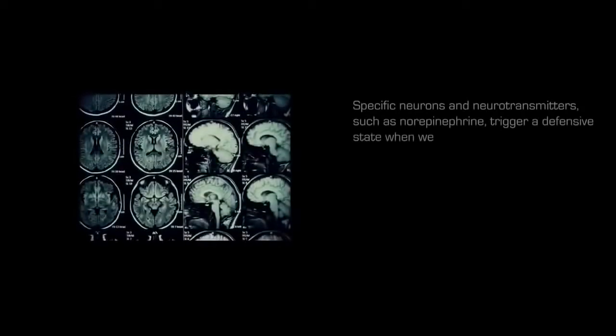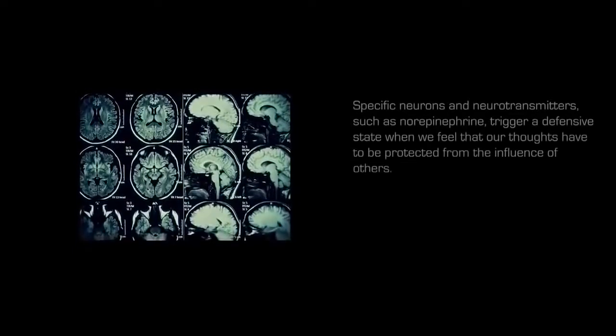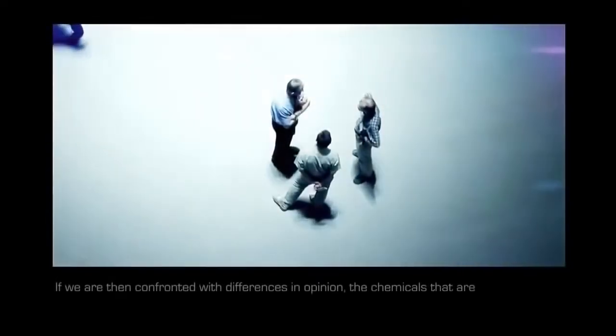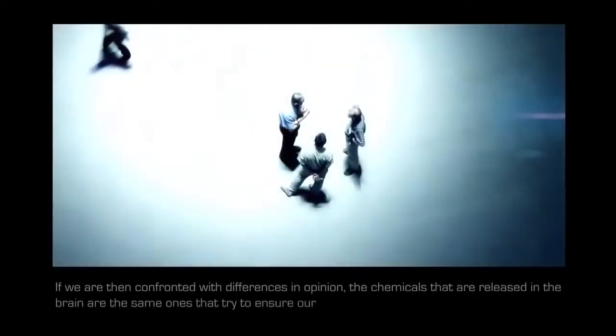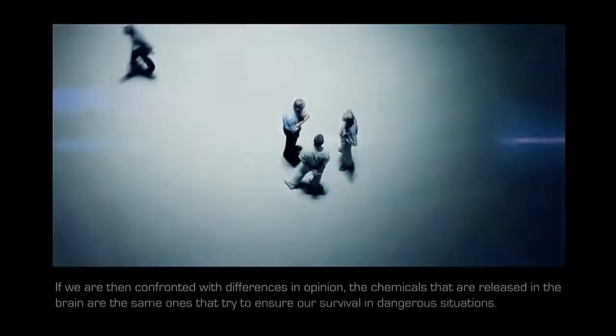Specific neurons and neurotransmitters, such as norepinephrine, trigger a defensive state when we feel that our thoughts have to be protected from the influence of others. If we are then confronted with differences in opinion, the chemicals released in the brain are the same ones that try to ensure our survival in dangerous situations.